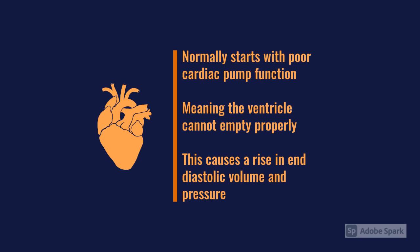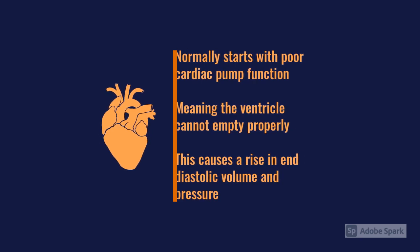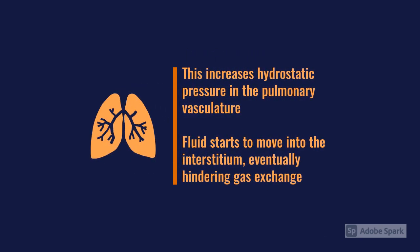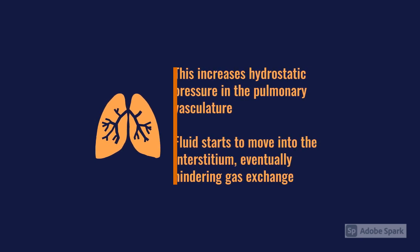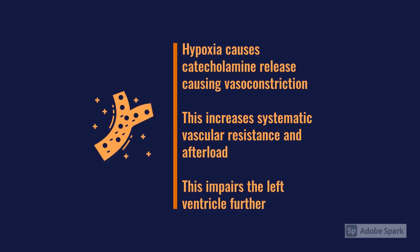This increase in pressure causes a rise in hydrostatic pressure in the pulmonary vessels, which causes fluid to move into the interstitium, eventually causing fluid to appear in the alveoli, which hinders gas exchange — generally oxygenation. As oxygenation worsens, you get a catecholamine release which causes vasoconstriction, ultimately increasing systemic vascular resistance, increasing afterload, and impairing the left ventricle further.